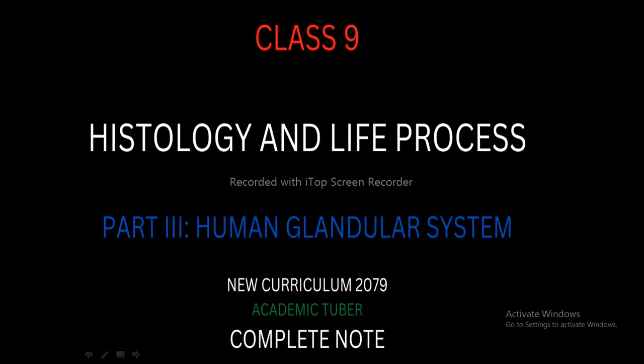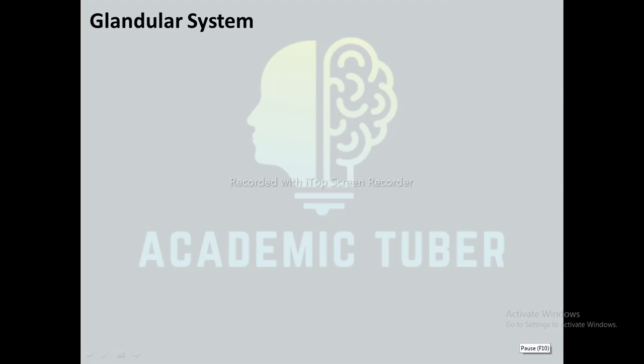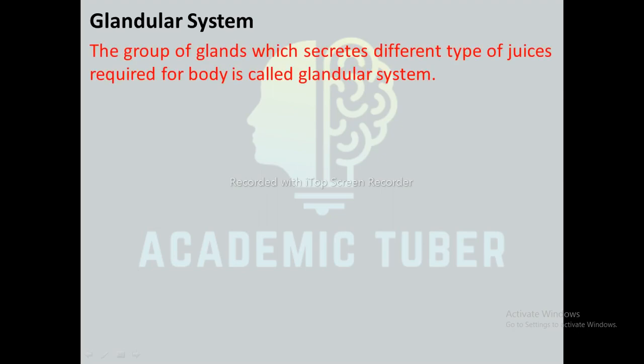If you like this video, please share it with your friends and don't forget to give your valuable response in the comment section. The human body consists of different glands that produce different secretions required for the body. These secretions mainly contain hormones, enzymes, and juices, which enhance several activities in the body and make it fit and healthy.